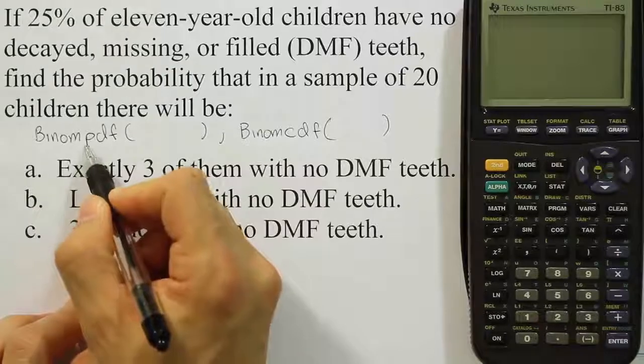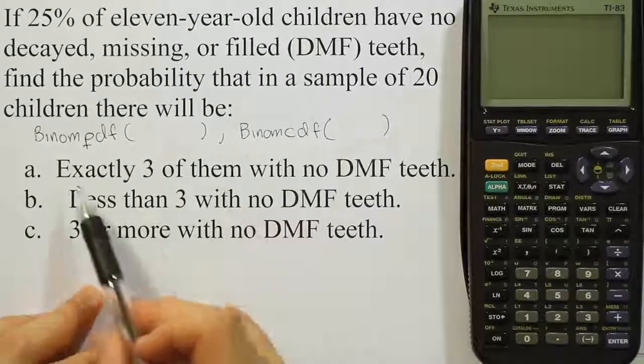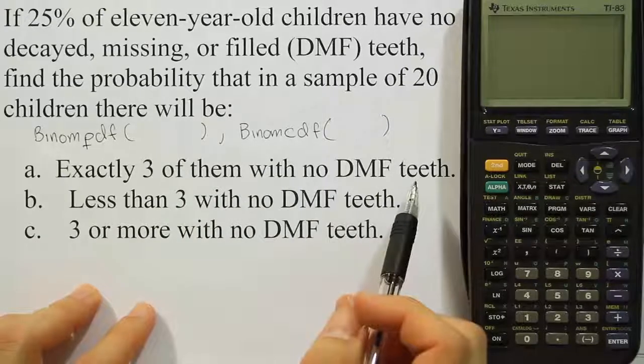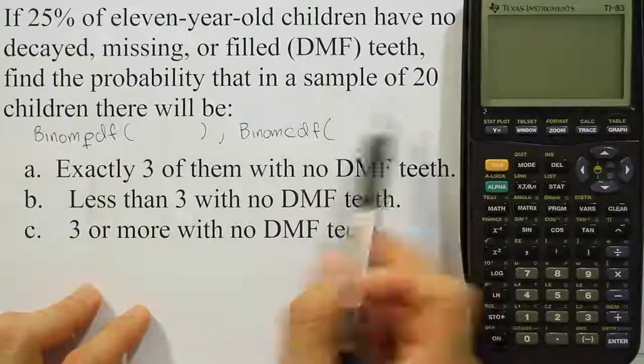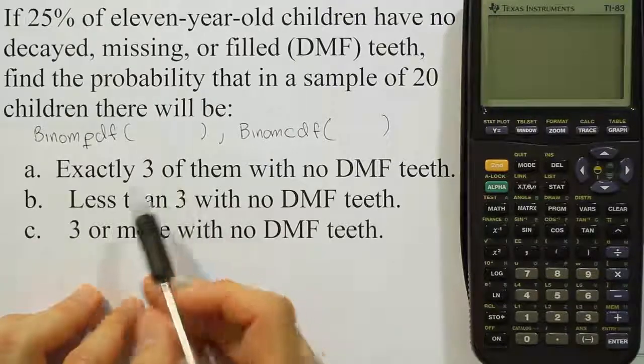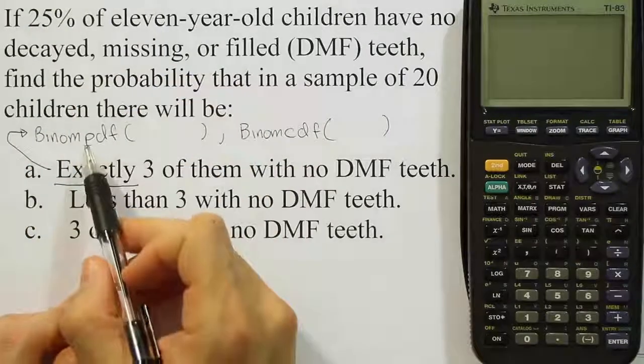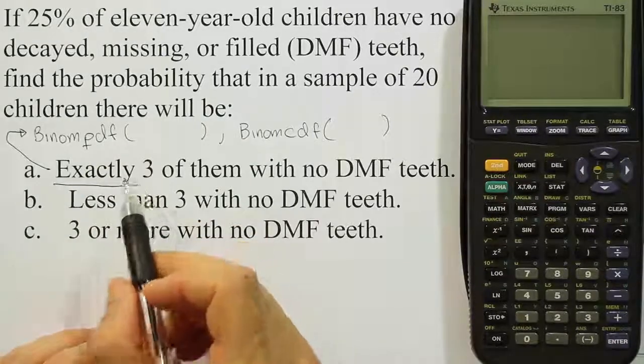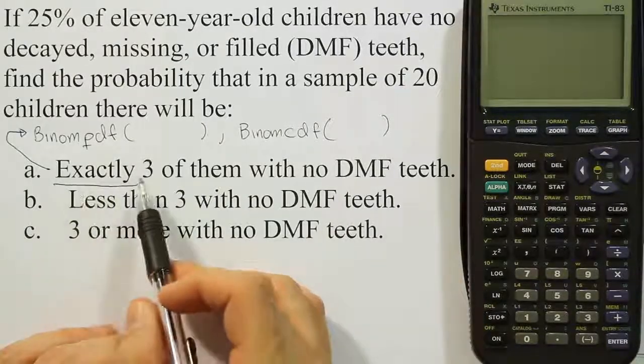The PDF is going to be when we want to know the probability that something happens exactly. So for example, if I want to know for part A the probability that exactly three of the children will have no DMF teeth. DMF teeth are decayed, missing, or filled teeth. So the word exactly here is a key phrase that indicates we should be using binompdf, the probability density function. This PDF is for a specific instance, one scenario. Exactly three, or exactly five, or exactly seven would use this PDF.